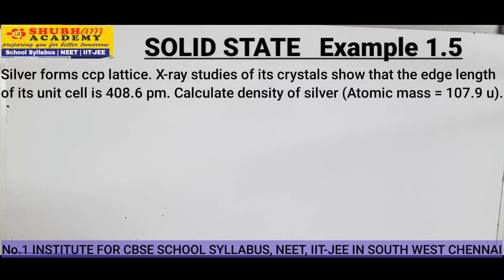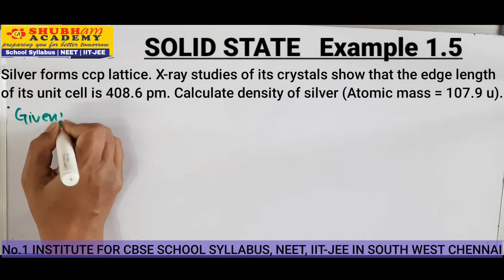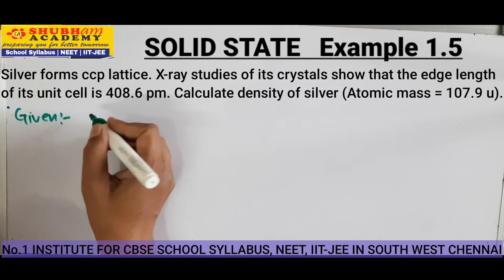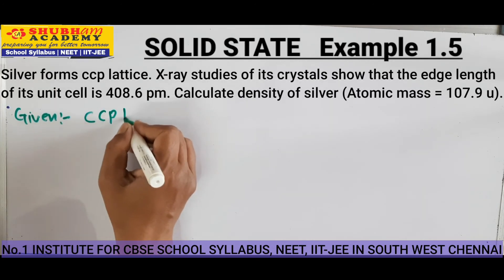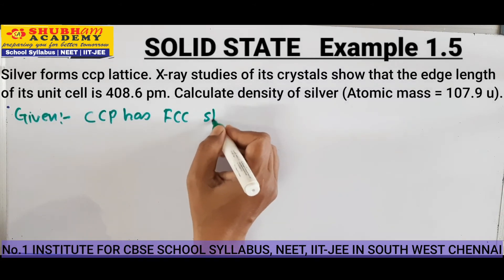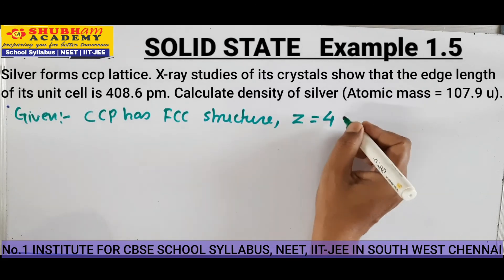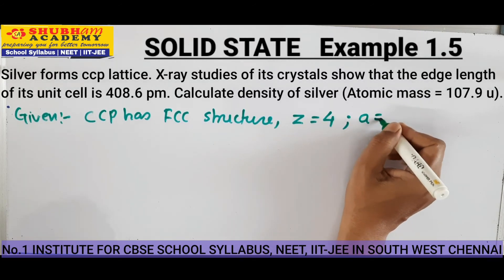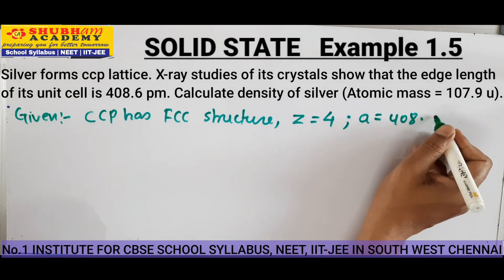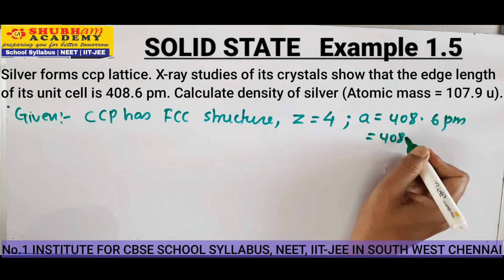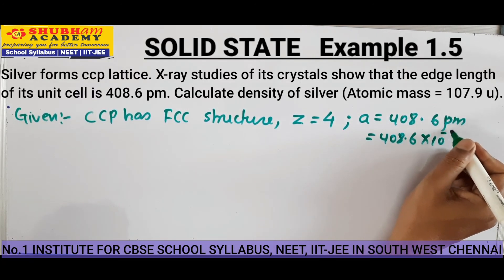Moving on to the next example. Silver forms a CCP lattice and X-ray studies of its crystal show that the edge length of its unit cell is 408.6 PM. Calculate the density of the silver. The atomic mass of silver is given as 107.9 U. Given that it is a CCP lattice, CCP has FCC structure, so Z is equal to 4. A is equal to 408.6 picometer, that is 408.6 into 10 to the power minus 10 centimeter.